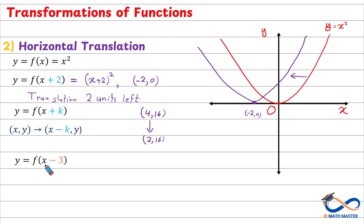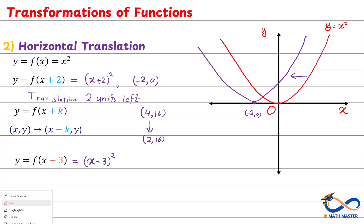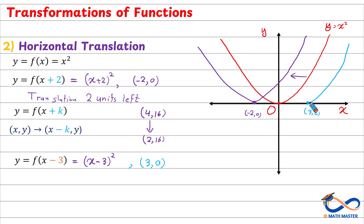Similarly, if we subtract a number inside — so f of x minus 3 — it will be a translation to the right. Here it will be 3 units to the right. Since f of x is x squared, f of x minus 3 will be (x − 3) squared. In the new function, if you replace x by 3, then y will be (3 − 3) squared = 0. The point (3, 0) is on the x-axis, and the parabola is 3 units to the right. So we have a translation of 3 units right.